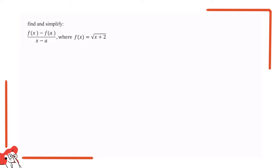The question says that find and simplify f(x) minus f(a) over x minus a, where f(x) equals square root of x plus 2.